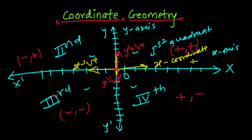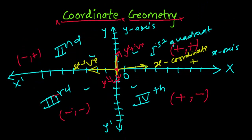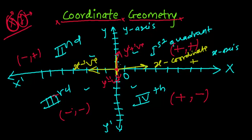In the fourth quadrant, x is positive but y is negative because you are moving downward. So to summarize: first quadrant is (+, +), second quadrant is (−, +), third quadrant is (−, −), and fourth quadrant is (+, −). In an ordered pair (x, y), x represents the x-coordinate and y represents the y-coordinate.